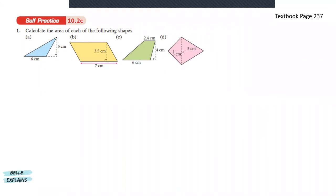Hello everyone and welcome to Bell Explains. In this video, I will be explaining chapter 10.2: area of triangles, parallelograms, kites, and trapeziums. Let's get to it.